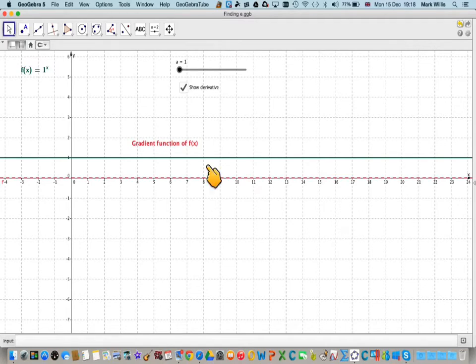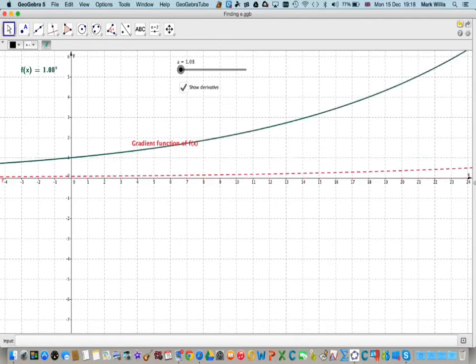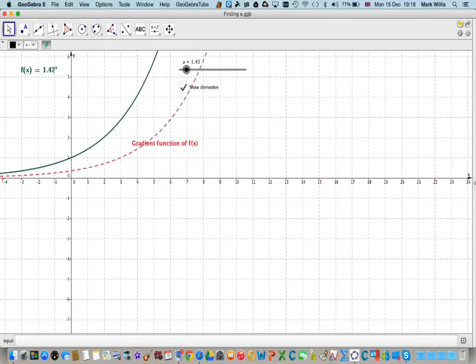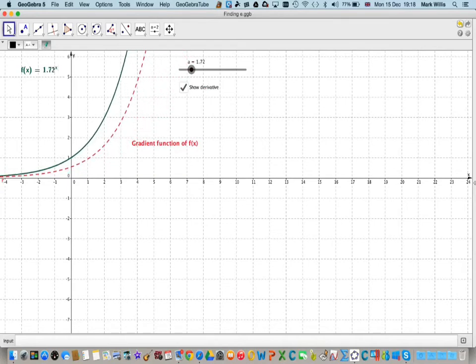For example, the gradient function of f of x equal to 1 to the x, that's like the line y equals x, will be 0, have a 0 gradient for any value of x. Now if I move this, then obviously the gradient function is going to change. If we look at this closely, you can see that the gradient function is getting very near what the actual function is.